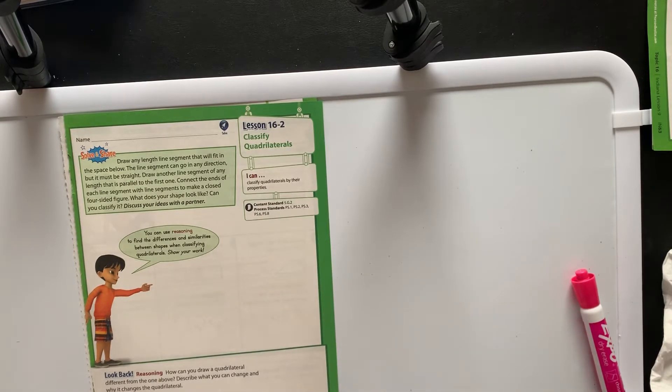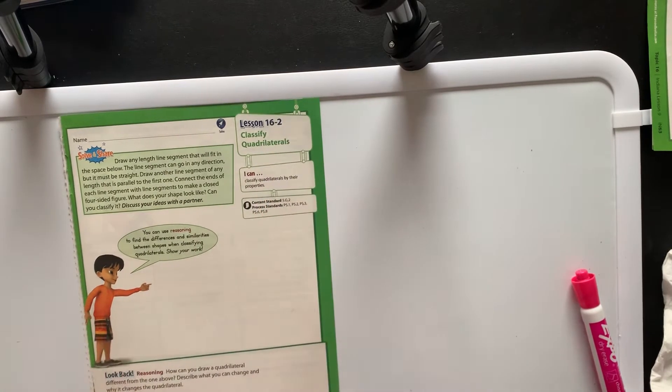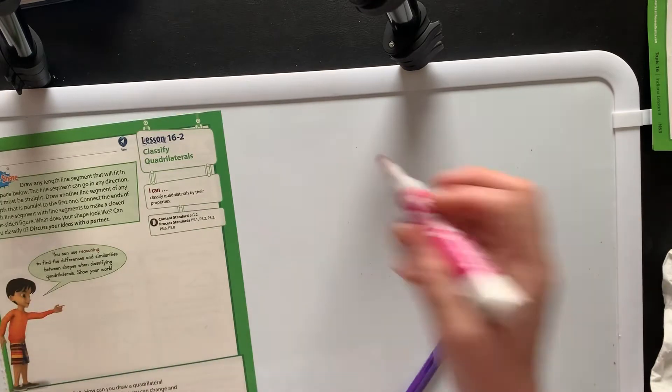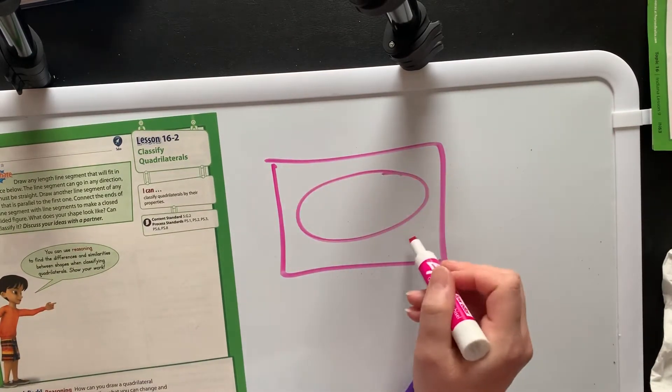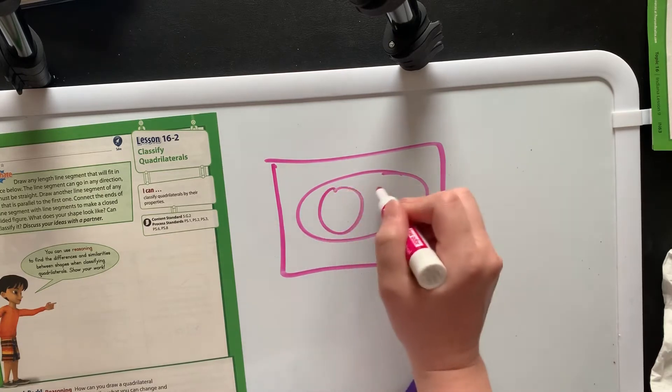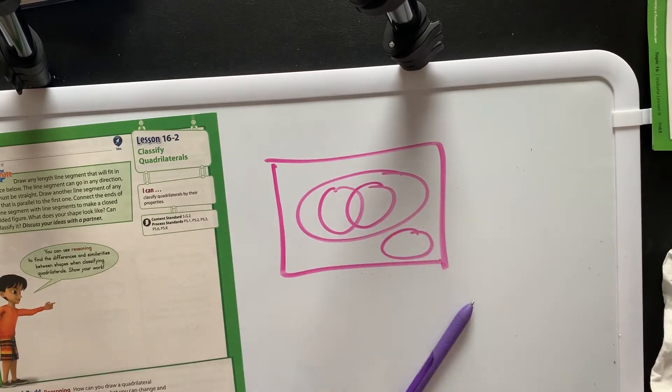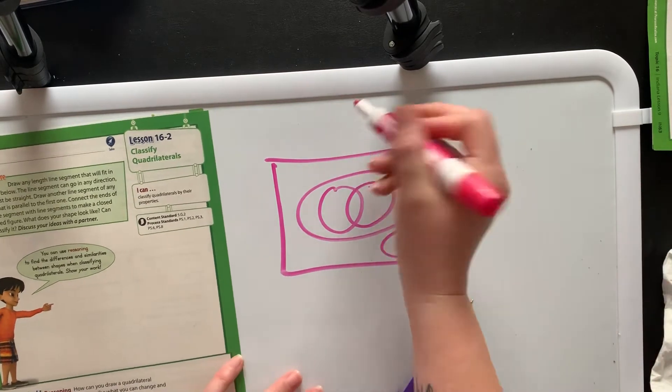Hi there, so this is going to be lesson 16-2, classifying quadrilaterals. I already made a video where I show this - there's a rectangle and inside the rectangle there's an oval, and then there's a little oval down here, and then there's a Venn diagram in each side inside of each one.